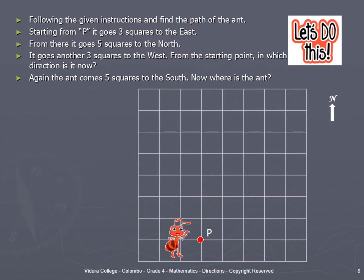Children, let's do this activity. You want to follow the given instructions and find the path of the end. Starting from P, it goes three squares to the east. From there, it goes five squares to the north. Then it goes another three squares to the west.